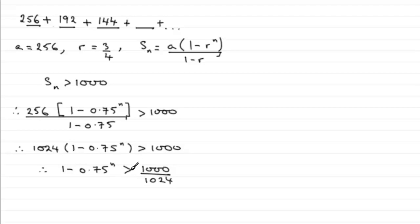We were dividing by 1024, positive value, so no problems there. So if we just work out what this part is, we've got 1 minus 0.75 to the power n is greater than, and if you do that division, you end up with 0.97656 and so on.